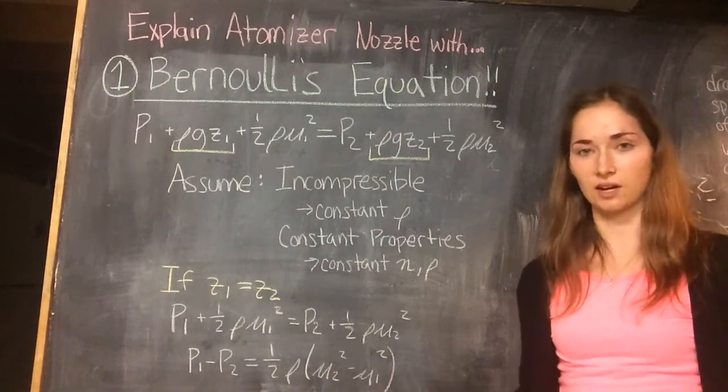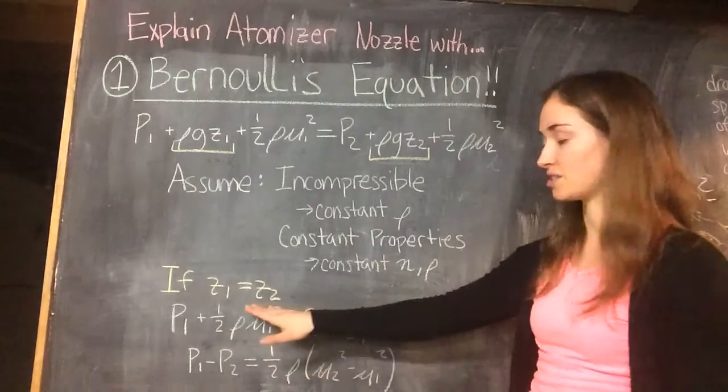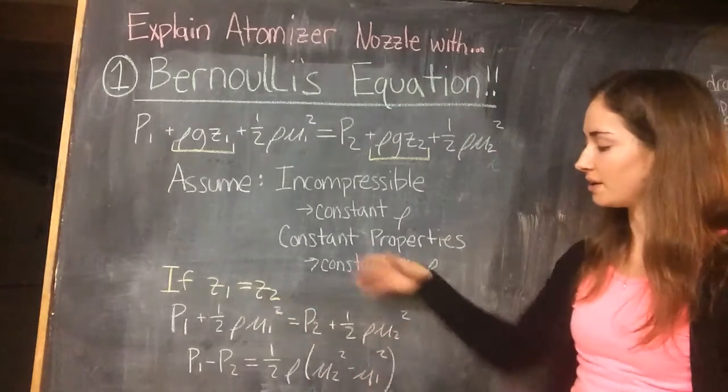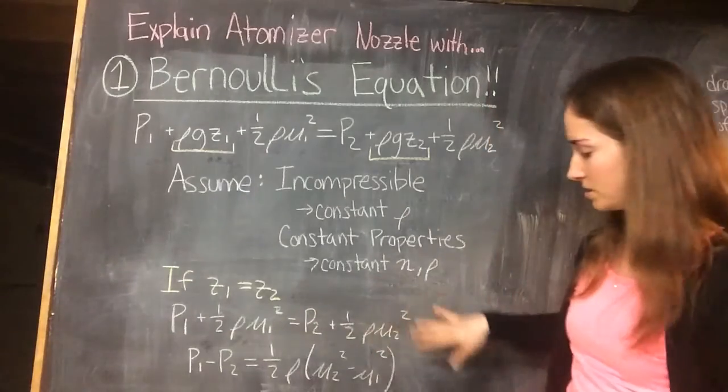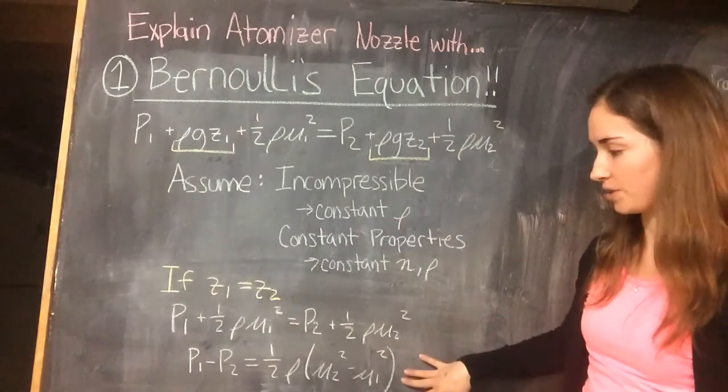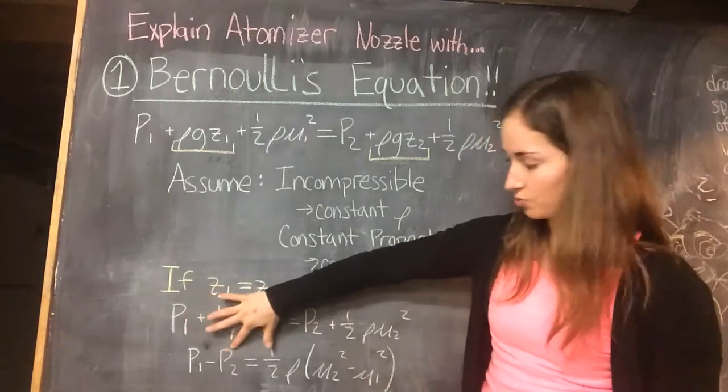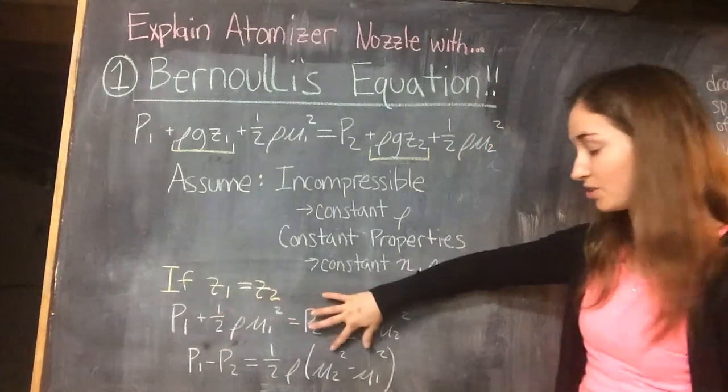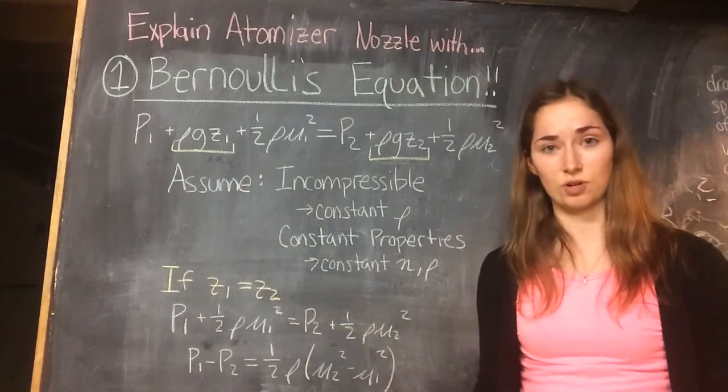If the two points compared have similar heights, then the equation, these two terms cancel, giving us this simplified equation. Further simplifying, we can relate pressure and velocity. If pressure one is greater than pressure two, then velocity two is greater than velocity one. The inverse is also true.